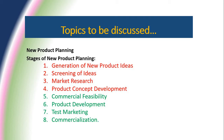The topics discussed in this lecture are the new product planning. In our last lecture we discussed product planning and the components of product planning. In this lecture we are going to talk about what is new product planning and the stages of new product planning. The product is planned, managed by the market, and finally the product is produced and introduced to the market.